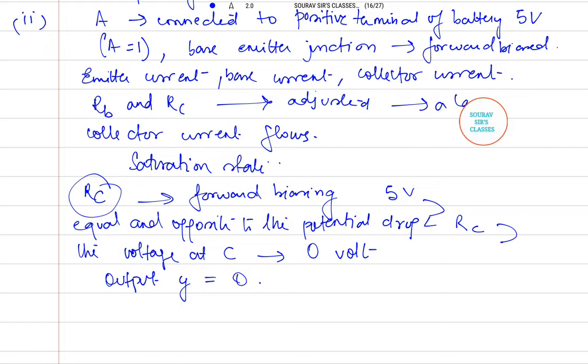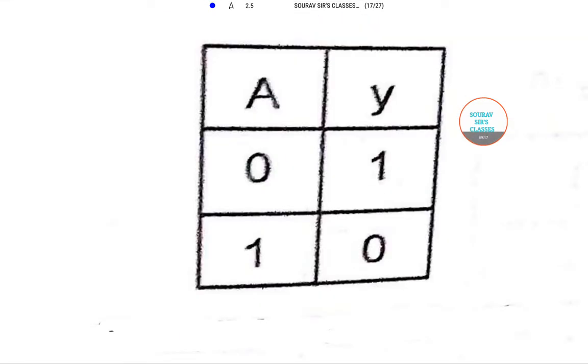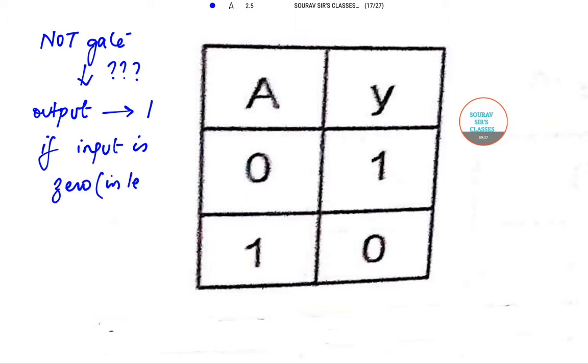Thus we can see that the operation of NOT gate is actually based on the following rule: the output of a NOT gate is actually 1 if the input is 0 in level and vice versa. This particular table actually provides at a glance the two cases that we have discussed. It is actually the truth table of NOT gate.